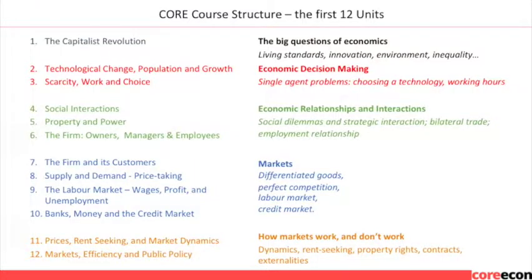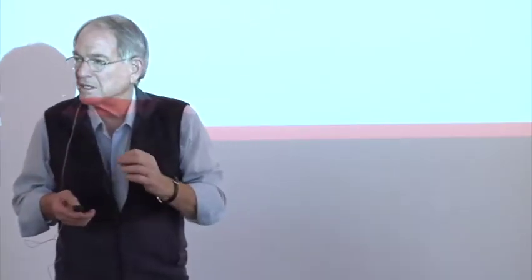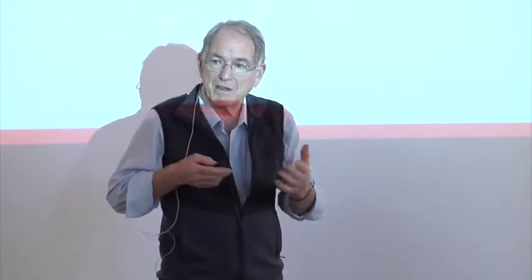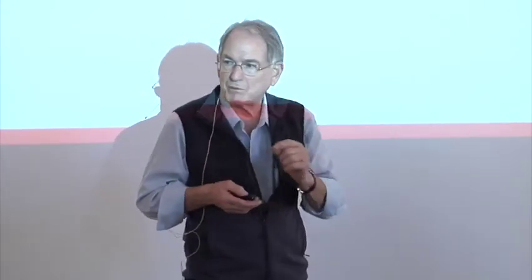Now let's talk about the course outline. We start with the capitalist revolution — big questions, engaging people, and beginning to work with data. The second and third units are about individuals interacting with nature or given prices, just an individual acting by themselves — technology adoption or work hours choice. Then we move to people interacting with others, which is where we introduce game theory and strategy. Property and power is a very critical and novel part of the curriculum — that's where we talk about the exercise of power.